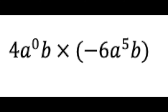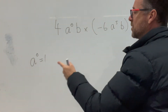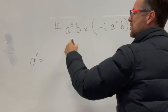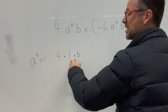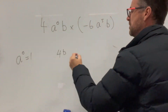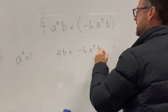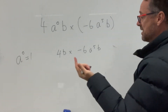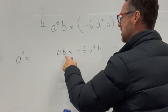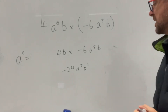Here we have a multiplication question with a and b, and we have a to the power of 0. The formula sheet tells us that a to the 0 equals 1. So we replace a to the 0 with 1, making it 4 times 1 times b, which is 4b. Multiplying by negative 6a⁵b: 4 times negative 6 is negative 24, there's no separate a so it stays as a⁵, and b times b is b squared — giving us negative 24a⁵b².